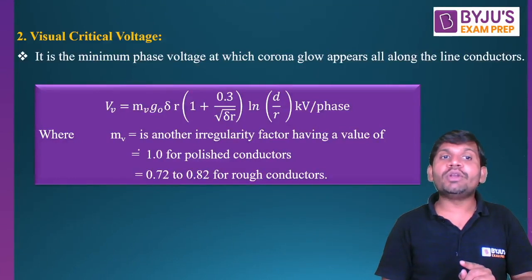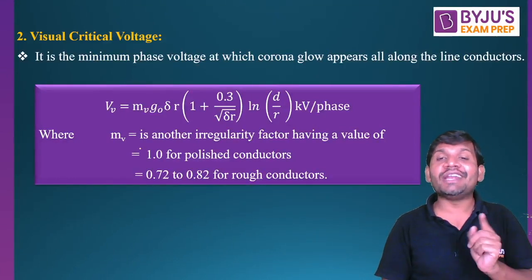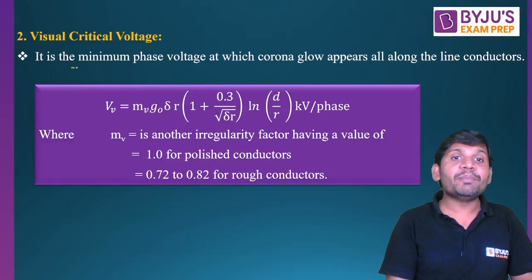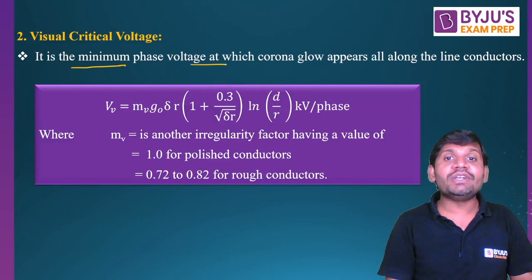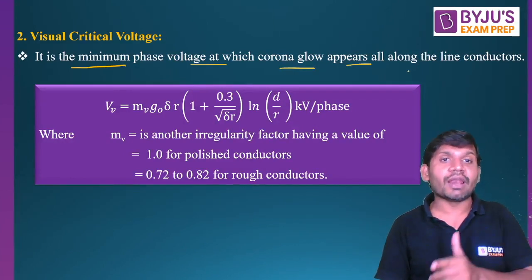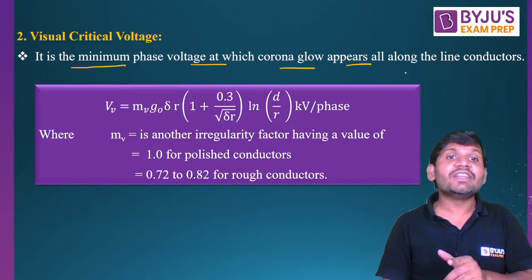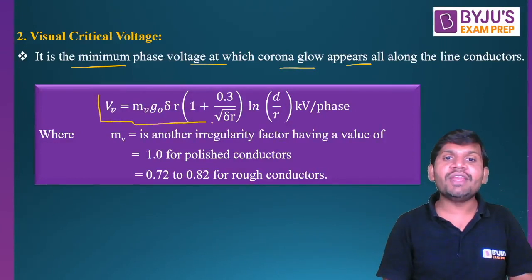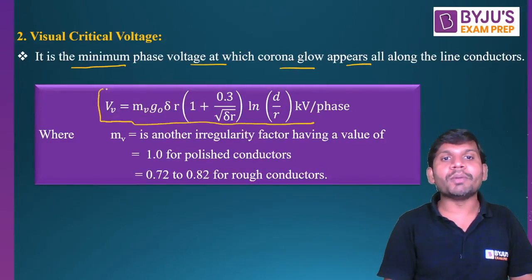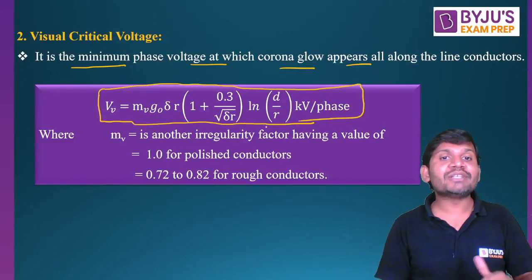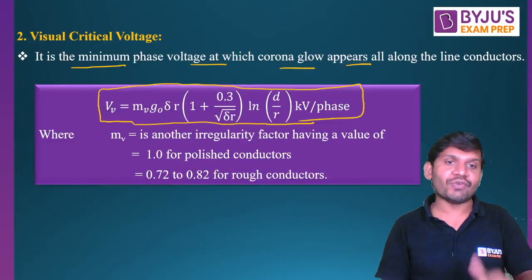One more important voltage is the visual critical voltage. The name itself indicates — it is the minimum phase voltage at which the corona glow appears all along the line. That is nothing but the visual critical voltage. This is also a very important formula to solve problems. It is also an RMS value and a phase value.